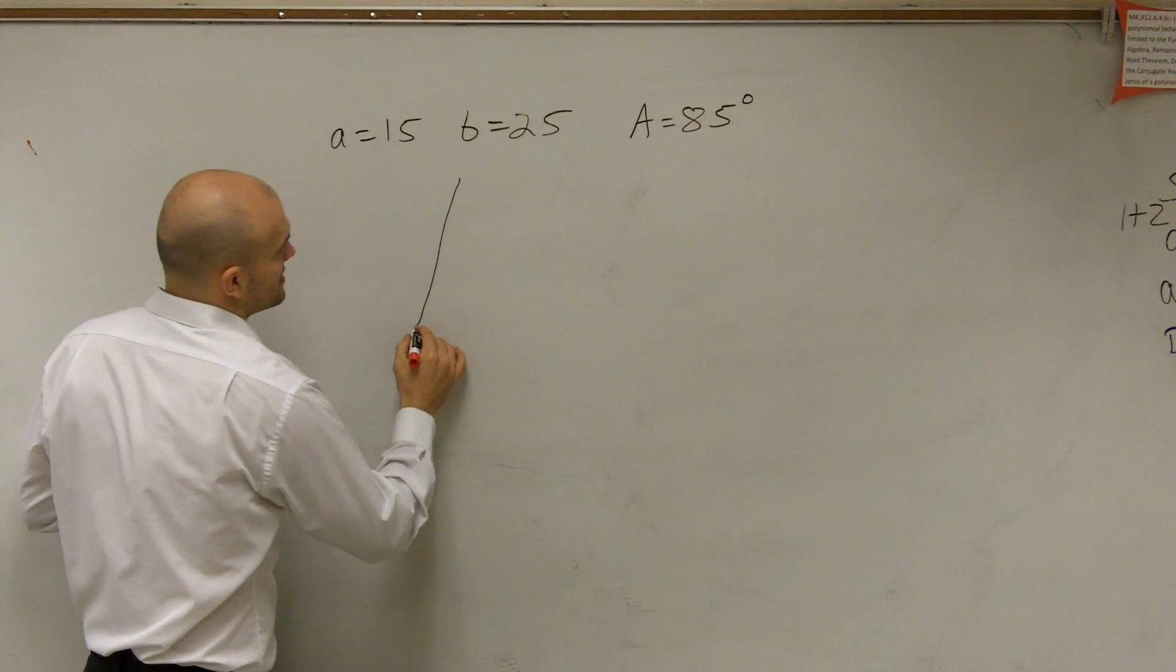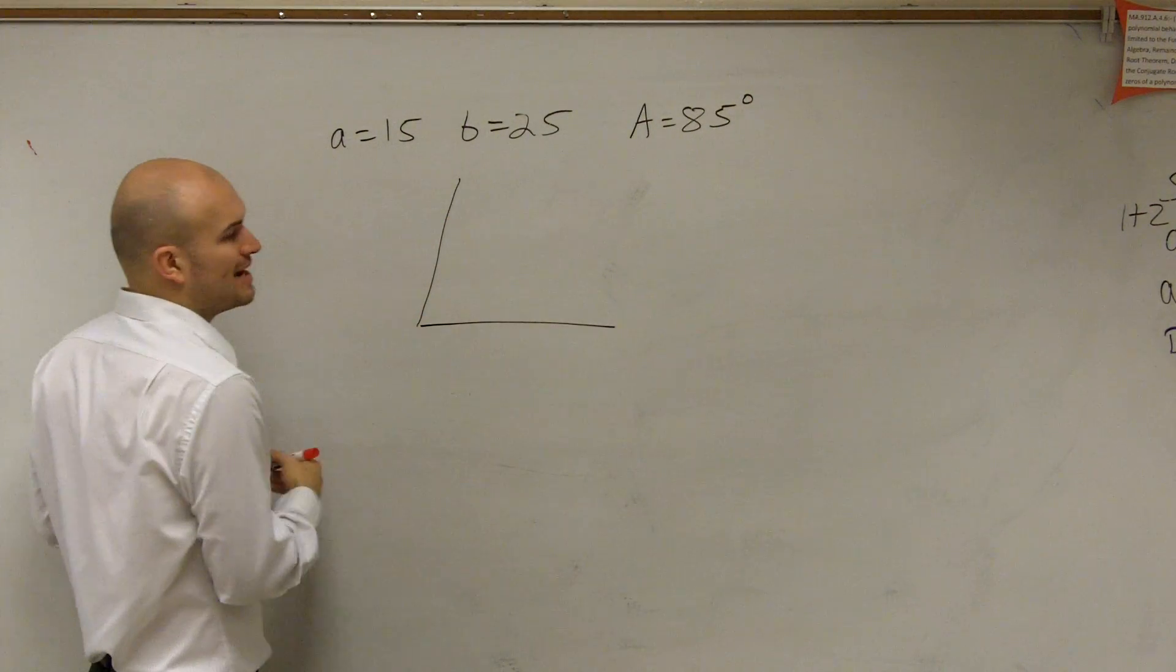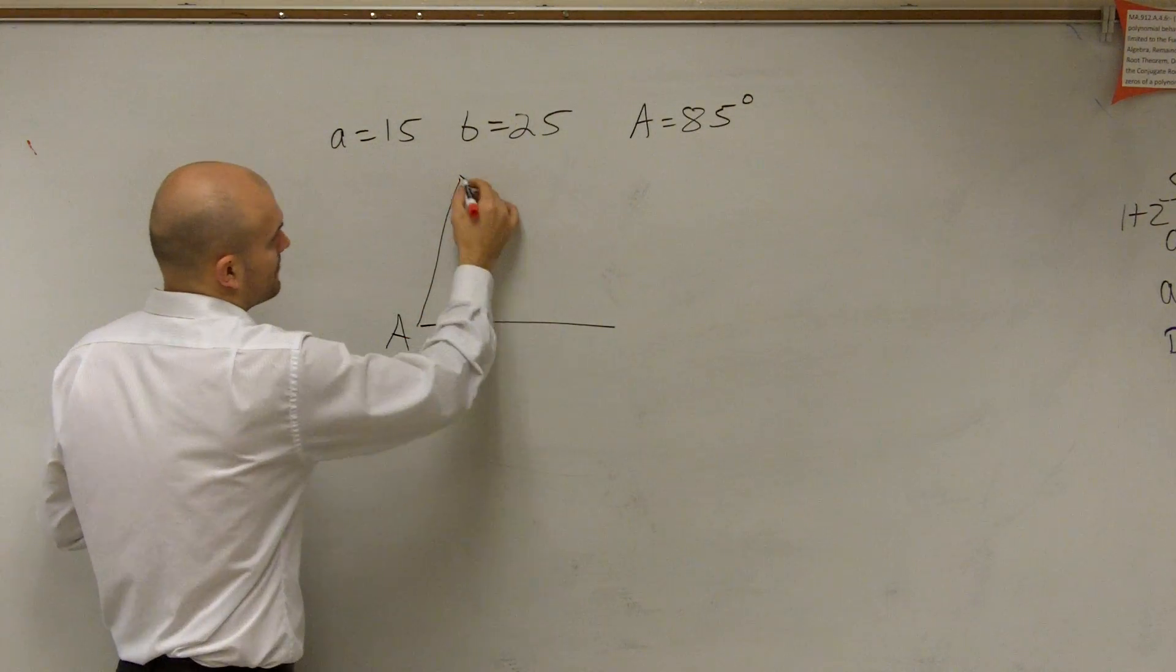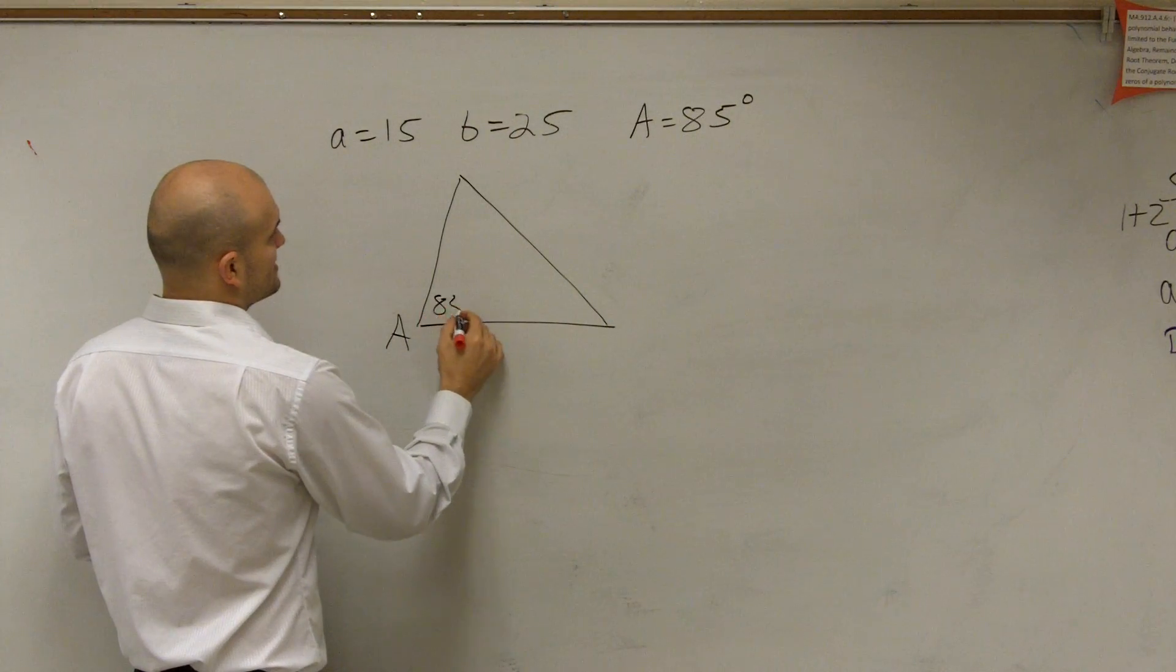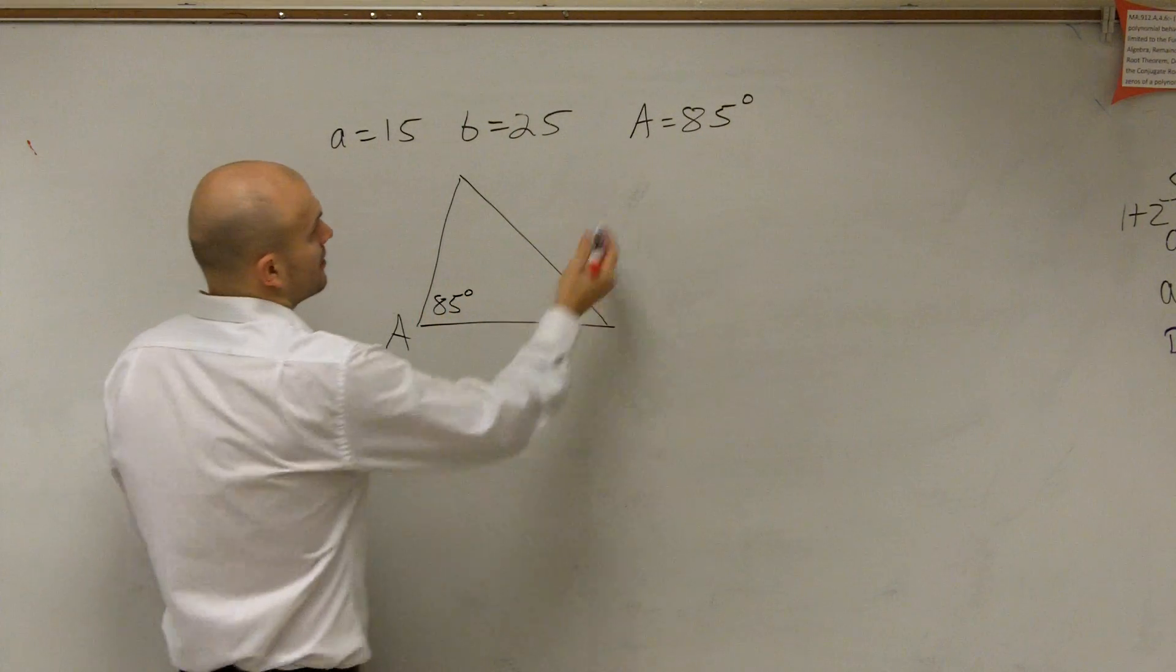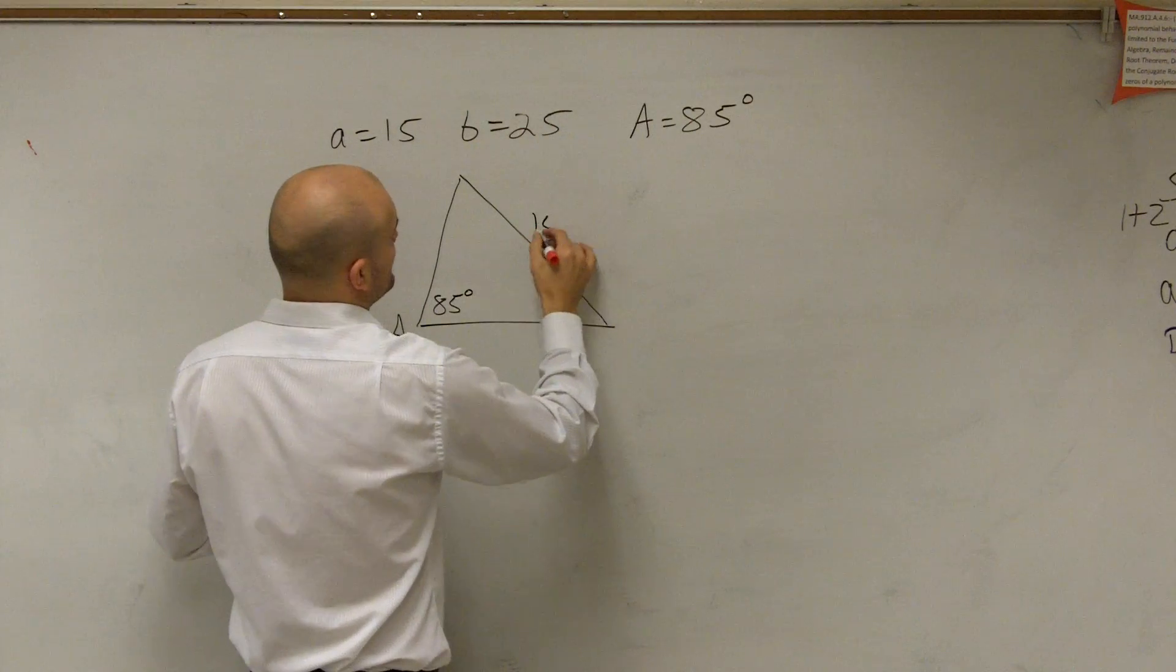So I'm roughly going to draw something that's close to 90 degrees, so we'll call this A. And we'll say this is 85 degrees. Then over here we have a equals 15.